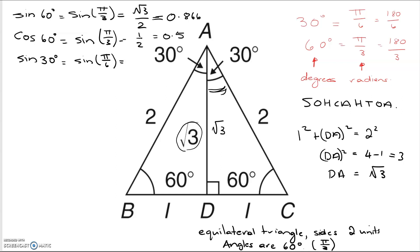So for sine 30 now, looking the other way, the opposite is 1 and the hypotenuse is 2.